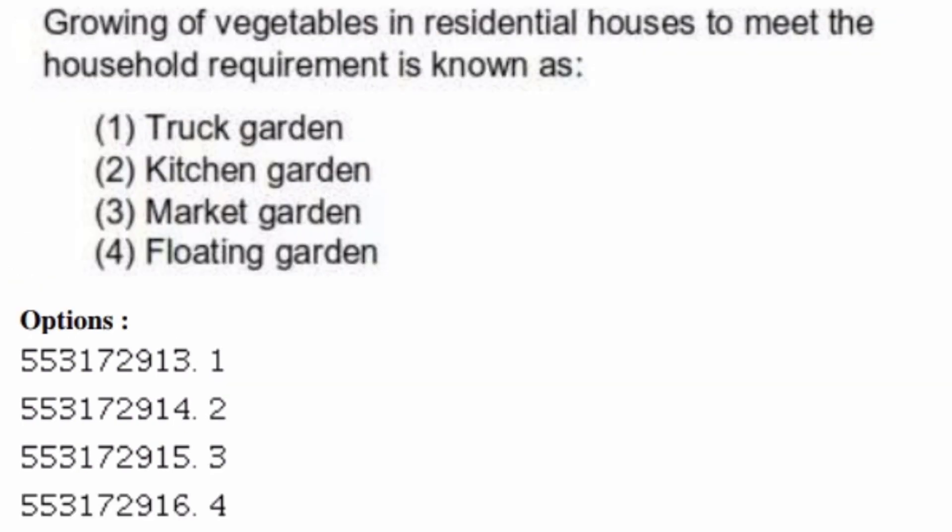Growing of vegetables in residential houses to meet household requirements is known as — options are: truck garden, kitchen garden, market garden, floating garden. The correct answer is option two, kitchen garden.